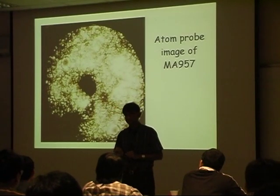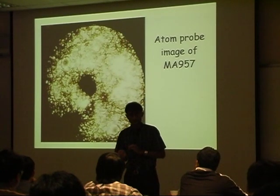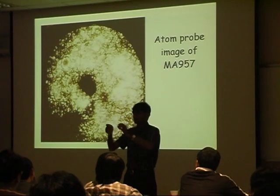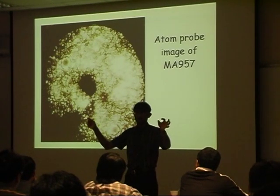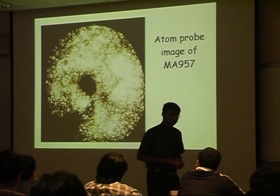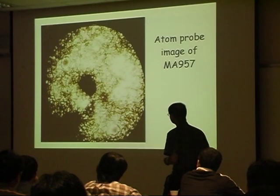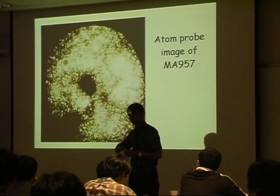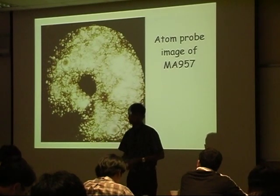The atom probe allows us to look at individual atoms — each dot represents one single atom. We can put an electrical pulse and pull out one atom, make it fly between two points, and the time of flight tells you what that atom is, whether it's hydrogen or whatever. Tom Seng did this experiment on the mechanical alloy material, which is based on iron, and pulled out millions of atoms one by one to examine the structure of the solution.